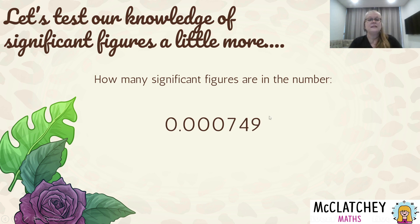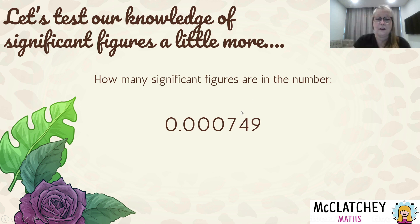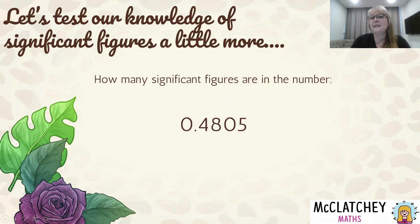Now, how many significant figures are in this number? Remember, leading zeros are not significant. There are three significant figures. If I'm asked to round to two significant figures, I round at the second significant figure: 0.00075. The nine tells me to round that up to a five. If I was asked to round to one significant figure, those leading zeros don't disappear — they stay as zeros. My first significant figure is seven, so everything after the seven is chopped off.